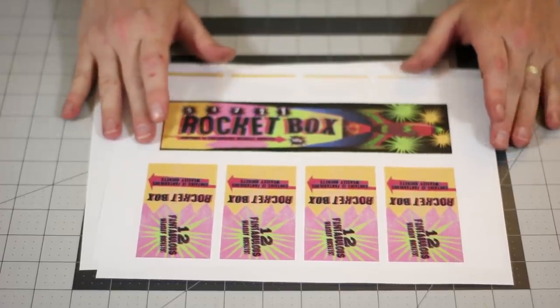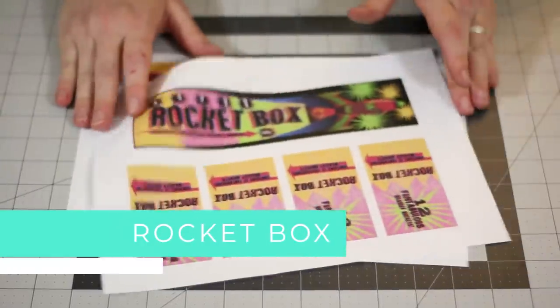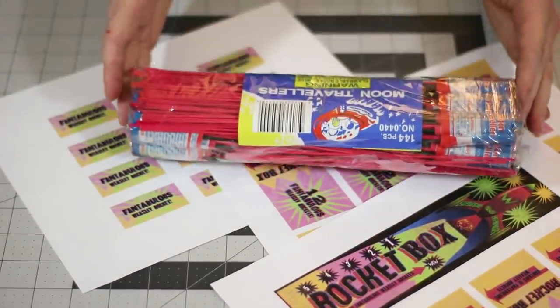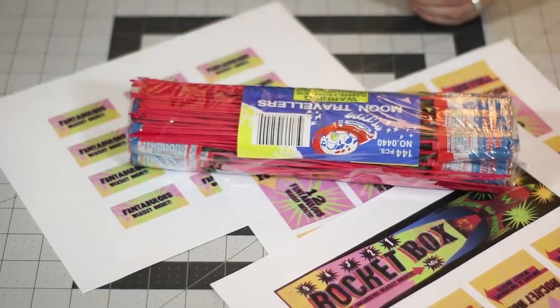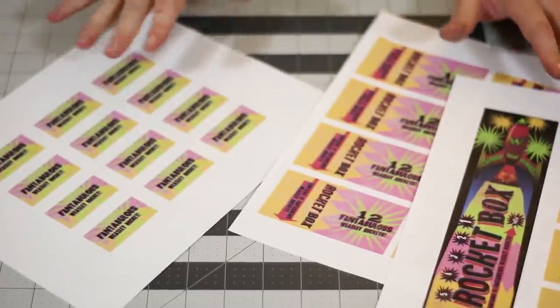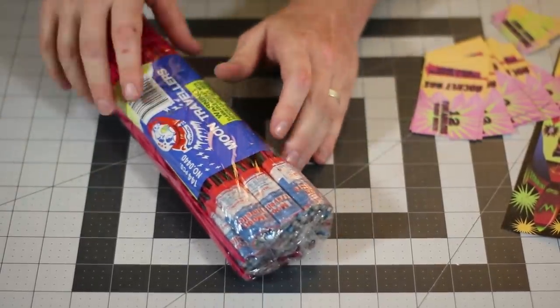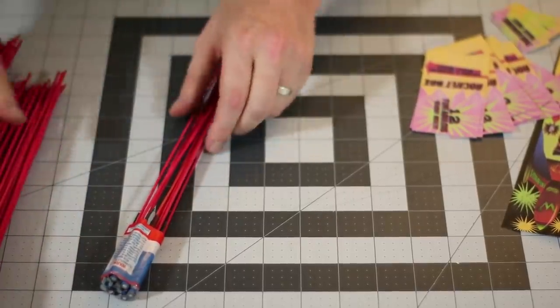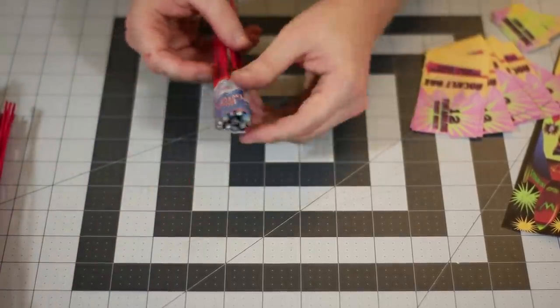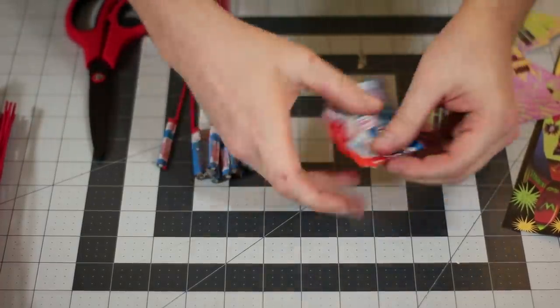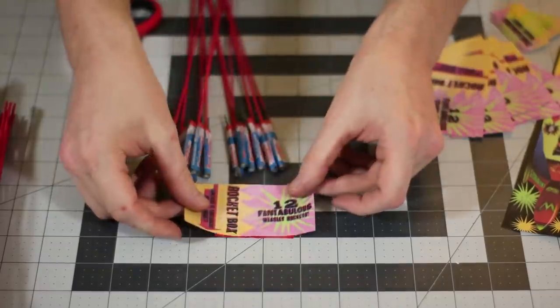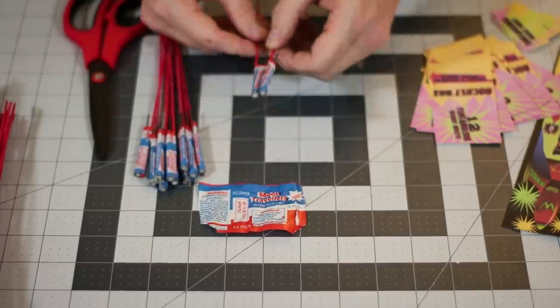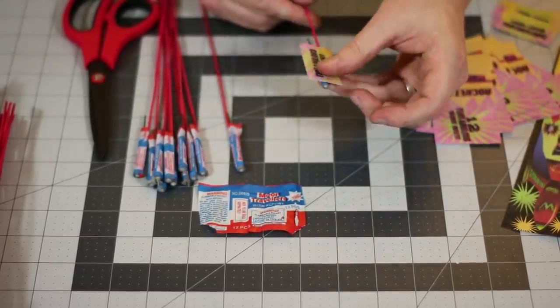Next, we'll be doing the rocket box. I have created templates for this. Basically, we're going to be transforming a package of bottle rockets into the rocket box. First, we want to cut all of these out. Now that we have all of that cut out, we want to open up this package. There should be about 12 of these things of bottle rockets. This label that I just removed is basically going to wrap around and hold all these together. Then, each one of these bottle rockets gets one of these labels.